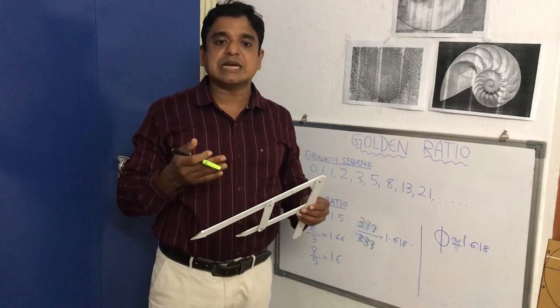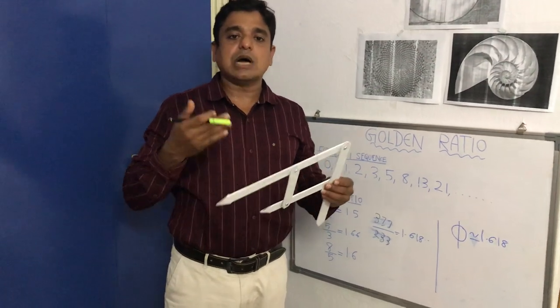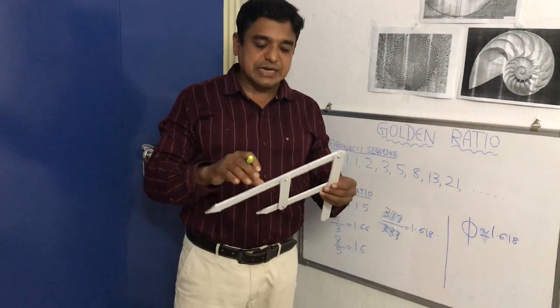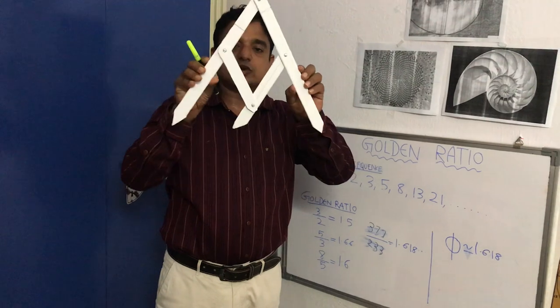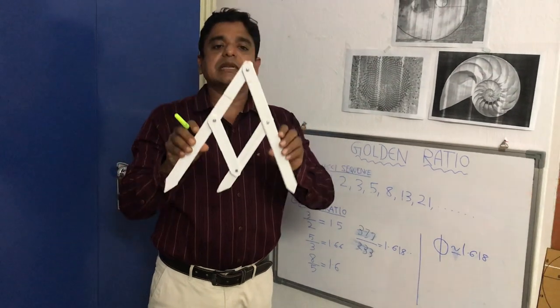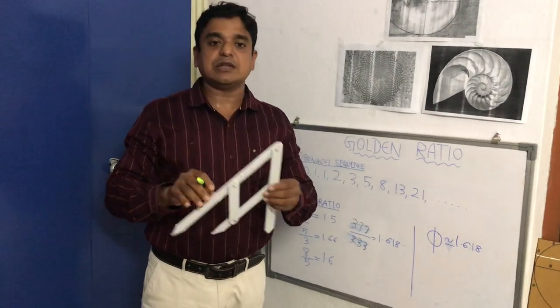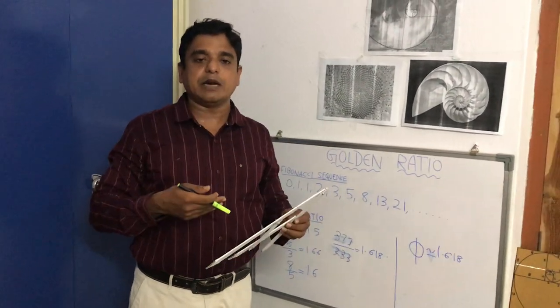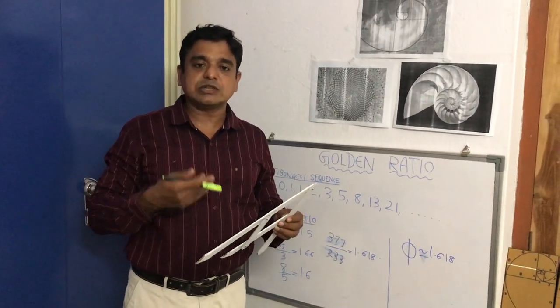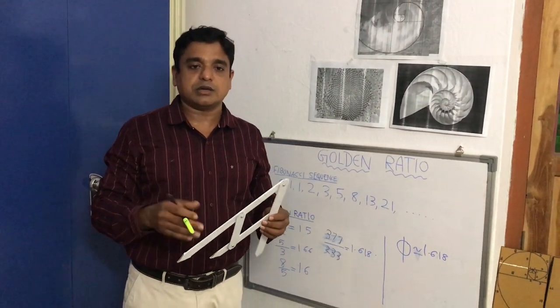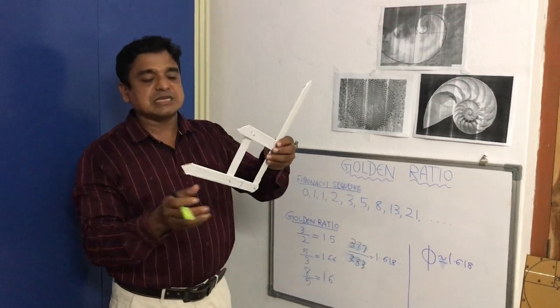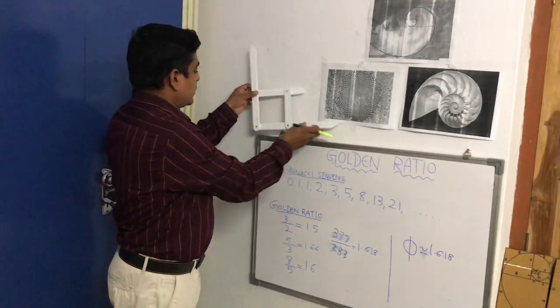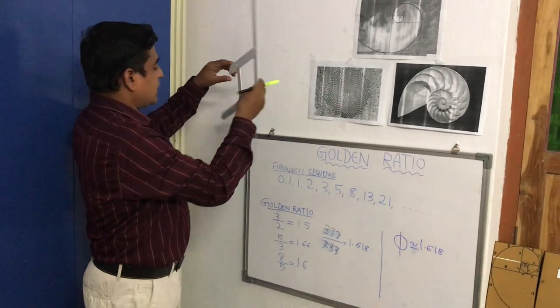You can see, without using a scale and without calculating the ratio, just use this caliper to see whether your body parts follow the golden ratio or not. This is very interesting — it is known as the golden ratio caliper.